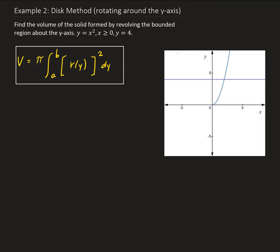In this example, we want to use the disk method to find the volume of the solid formed by revolving the bounded region about the y-axis. Our bounded region is going to be defined by y equals x squared, which is the graph that you see here in blue, y equals 4.